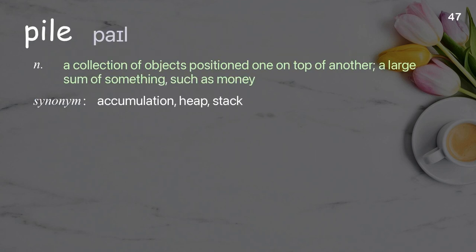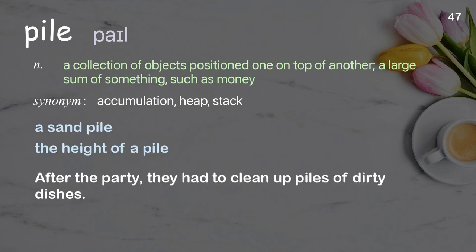Pile: A collection of objects positioned one on top of another; a large sum of something, such as money. Examples: A sand pile, The height of a pile. After the party, they had to clean up piles of dirty dishes.